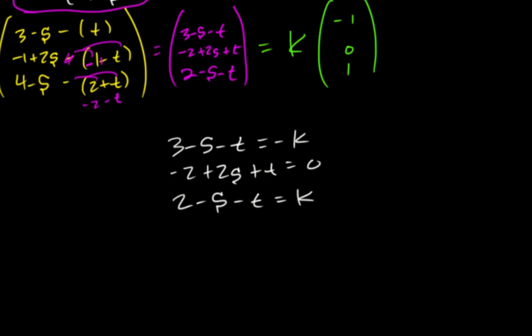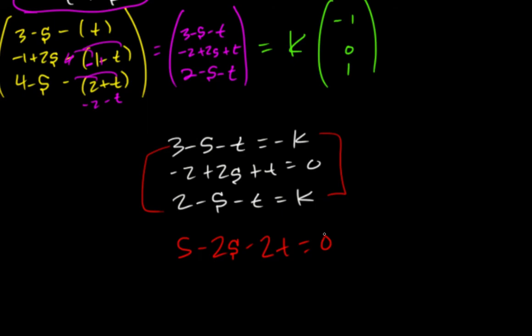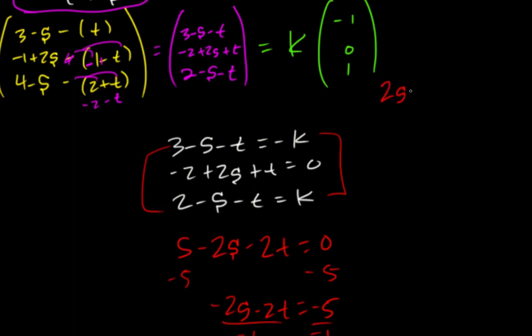We can approach this in a number of ways. Adding the first and third equations: 3 plus 2 is 5, negative 2s, negative 2t equals zero. Subtracting 5 gives negative 2s minus 2t equals negative 5. Dividing by negative one, we get 2s plus 2t equals 5. Taking the second equation and adding 2 to the other side, we get 2s plus t equals 2.